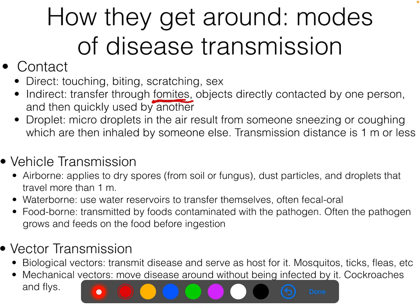Indirect contact is contact that occurs through what are called fomites. Fomites are objects that — say I sneeze into my hand, then I pick up a can of Coke and hand it to you, and you grab it with your hand and then rub your eyes. In this case, the can of Coke served as a fomite for indirect transfer.